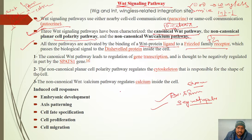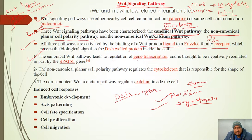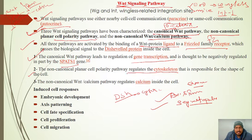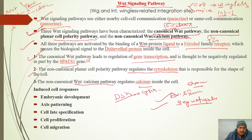What does this signal do? In the canonical WNT pathway, beta-catenin is the cytosolic protein involved, and the signal leads to gene transcription regulated by WNT target genes. In the non-canonical planar cell polarity pathway, the signal is regulated by the cytoskeleton. In the non-canonical WNT calcium pathway, calcium regulation inside the cell involves GPCR, IP3, and DAG.